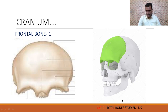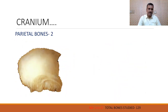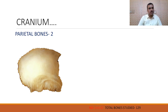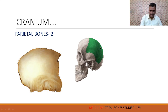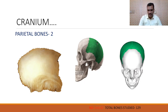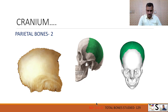So total bones studied by us up to this level are 127. Next are the parietal bones. These are flat bones and there are two in number — one on the left side and one on the right side. Their location is that they form the roof of the cranium. You can see here one bone on this side and another bone towards the other side. These two parietal bones form the roof of the cranium. Total bones are now 129.